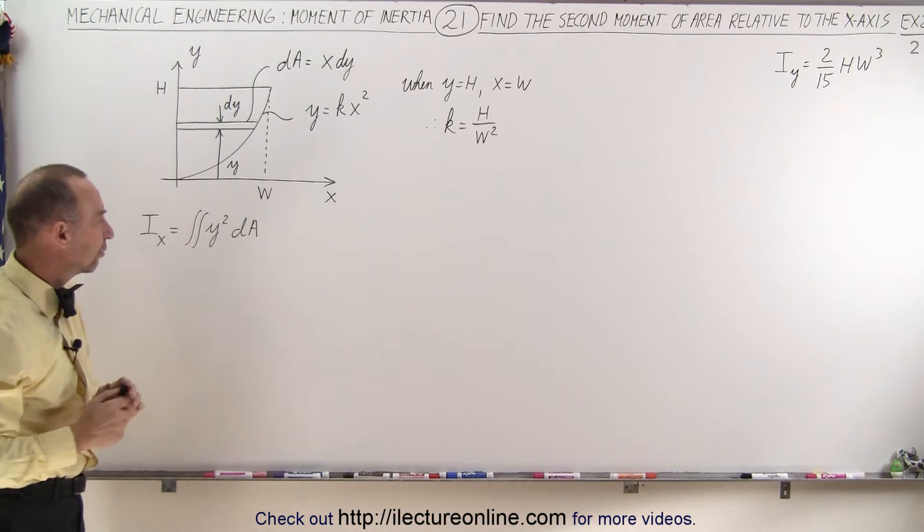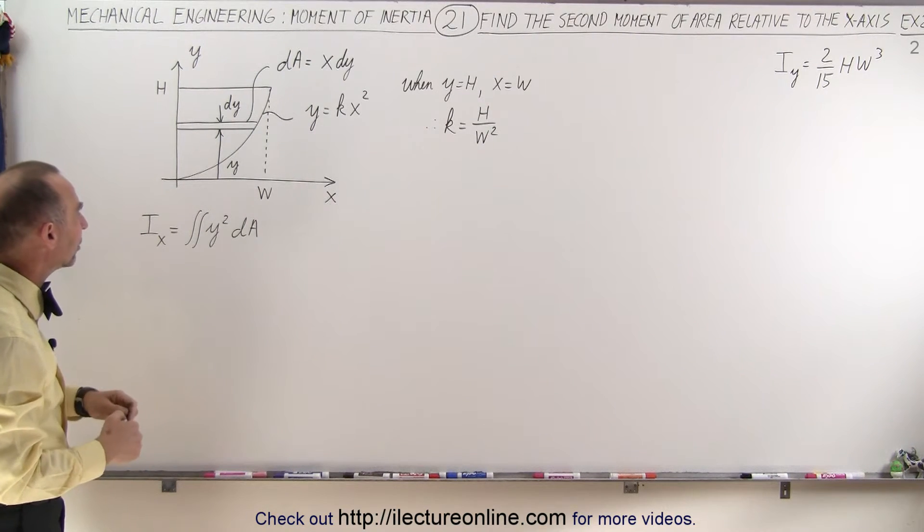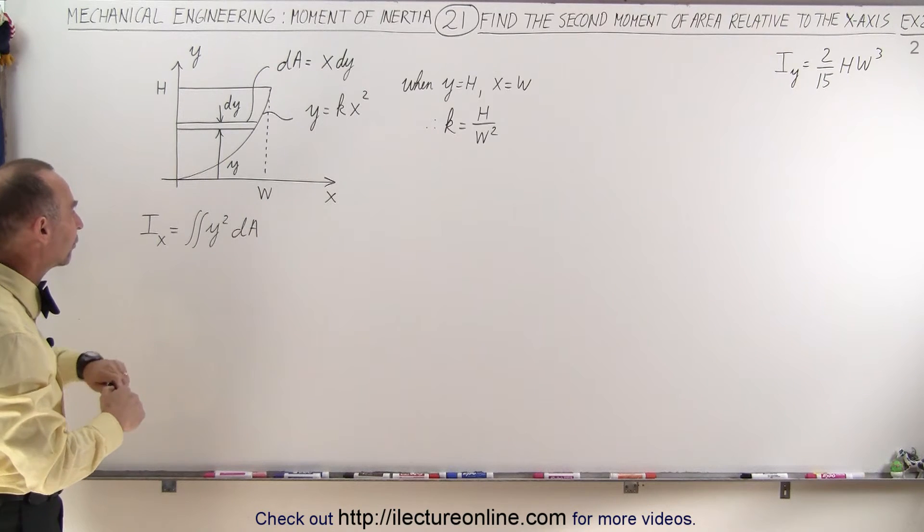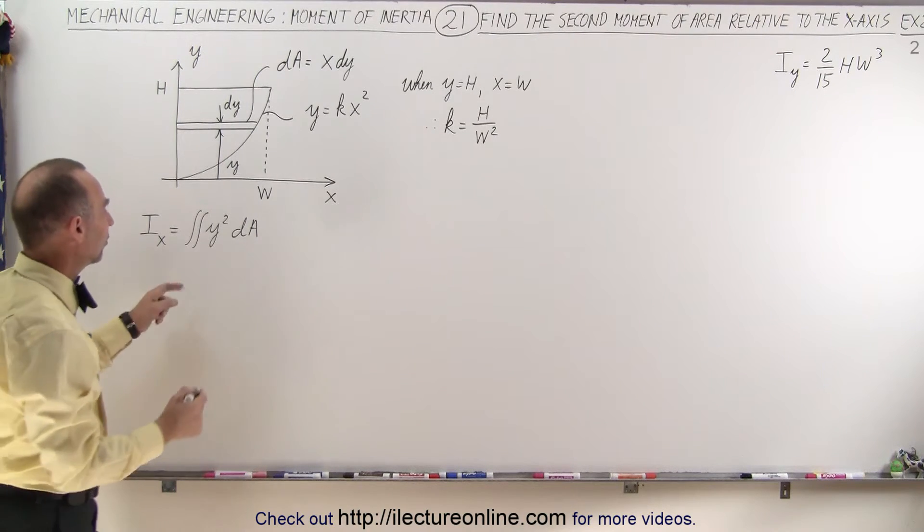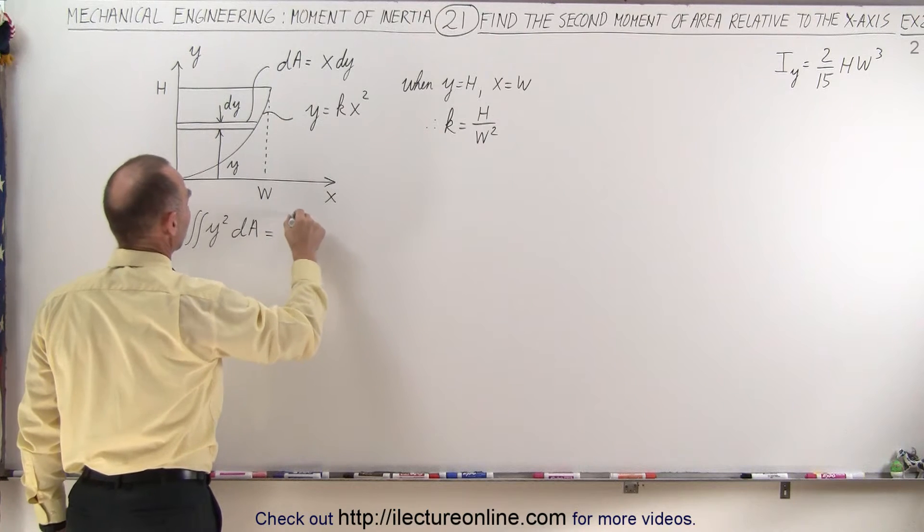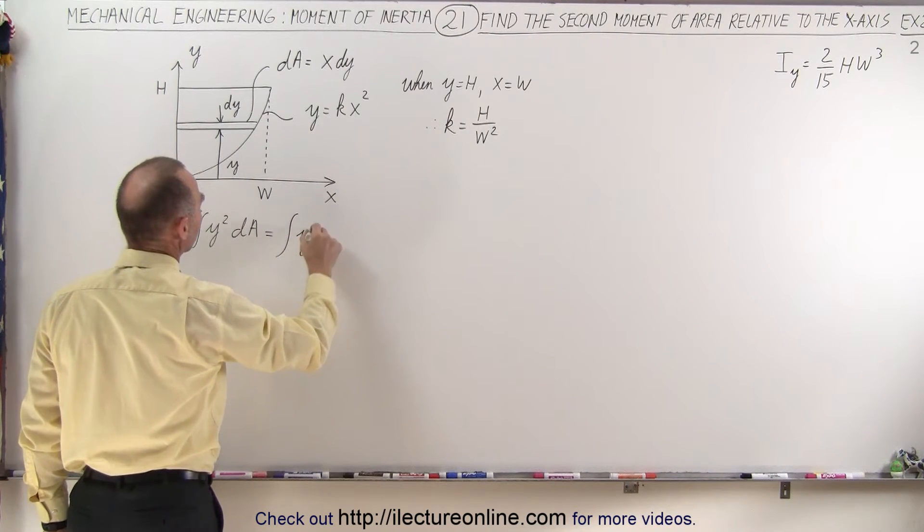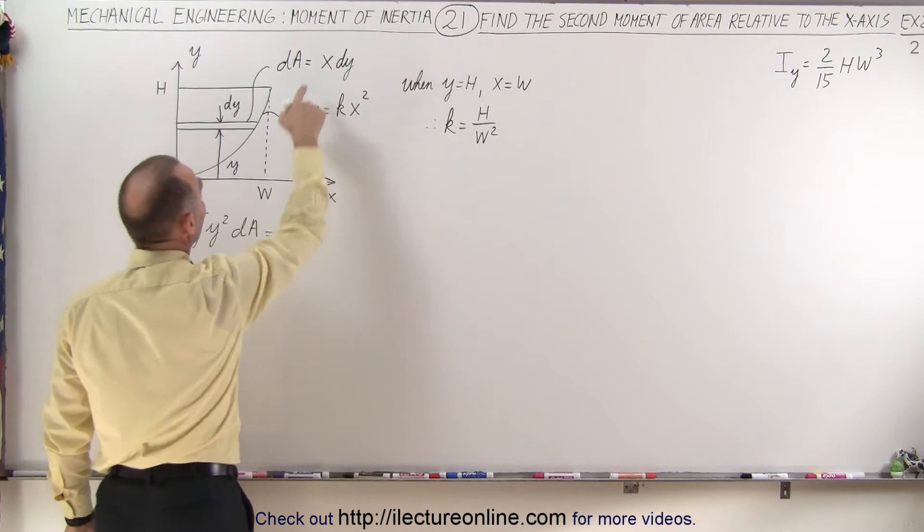Now this is going to become a single integral. We're not going to have to integrate over two variables. So this is now going to look as follows. The integral of y squared times dA, which is x dy.